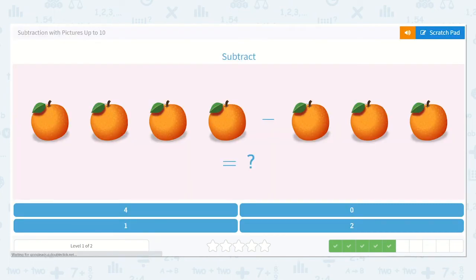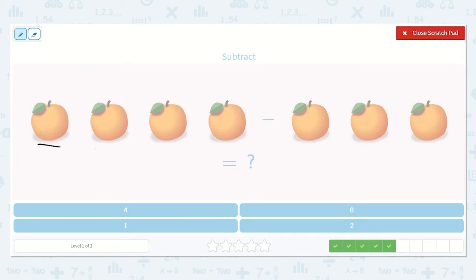Alright, now let's see what this one says. 1, 2, 3, 4 oranges. Minus, or take away, 1, 2, 3. What is that equal to?